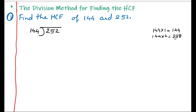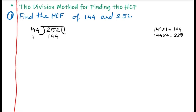So we cannot use 288, but we can use the smaller value, 144 ones are 144. We write 144 in the C-like structure below. Now we carry out subtraction: 252 minus 144. 2 minus 4 cannot be done, so we borrow from 5, making it 4 there. 12 minus 4 is 8. 4 minus 4 is 0. 2 minus 1 is 1. So we got remainder 108.